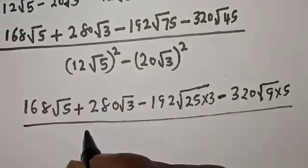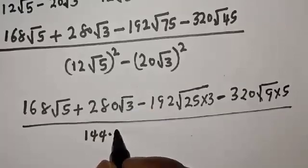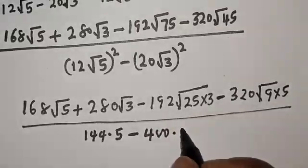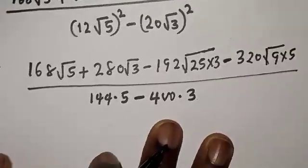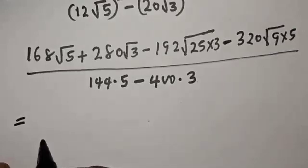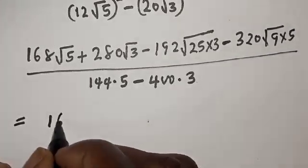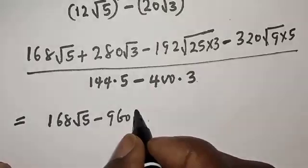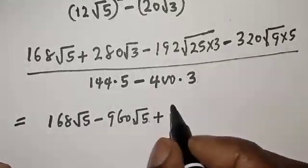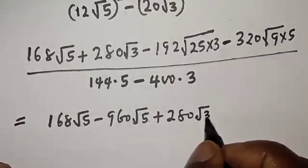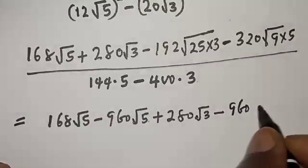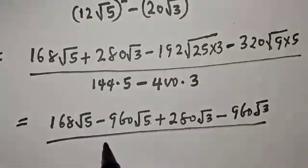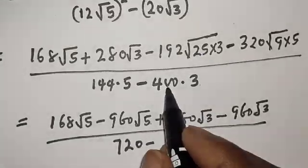So this is equal to 168 root 5 plus 280 root 3 minus 192 root of 25 times 3, minus 320 root of 9 times 5, over 12 squared, which is 144 multiplied by 5, minus 20 squared, which is 400 multiplied by 3.